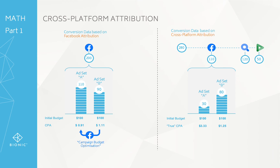After the same period — remember the same budget was spent — the true CPA from a cross-platform perspective is quite different. You end up with 333 versus 125. From a cross-platform optimization point of view, you'd want more budget made available for Ad Set B, and you'd bid higher to win the auction for Ad Set B.